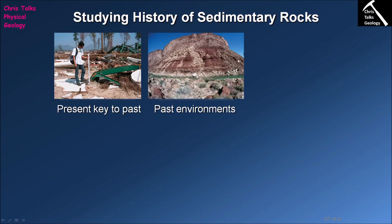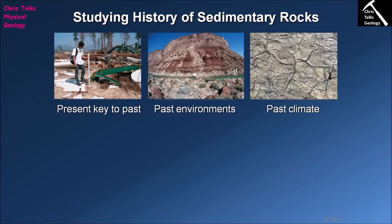Once we've identified the past environment, it gives us indications about past climate. For instance, if during periods of Earth history we see large areas of exposed continents becoming quite dry and desert-like, this suggests the Earth was becoming a drier environment overall. We also have periods where we see a reduction in glacial ice and rising sea levels, telling us global climates were getting warmer, causing ice caps to melt and releasing water into the seas, causing sea level to rise.